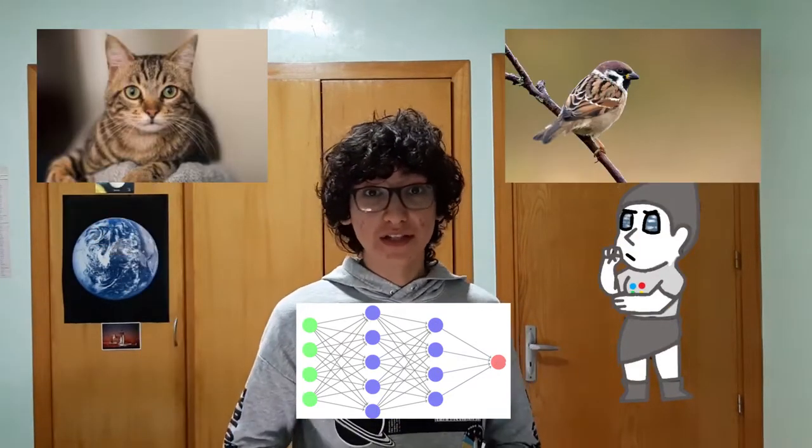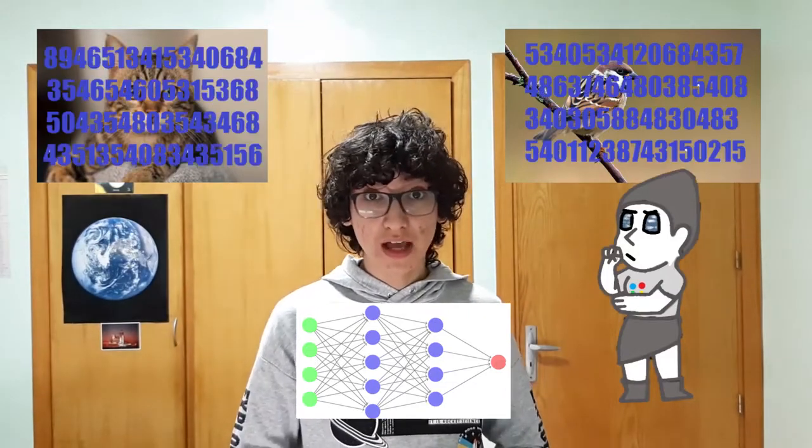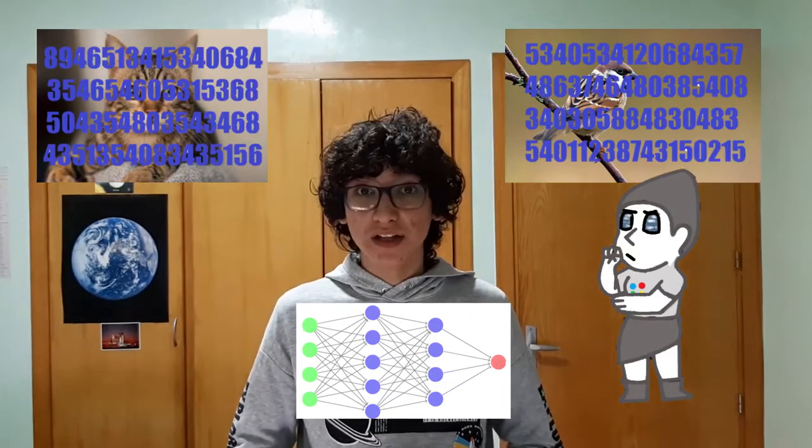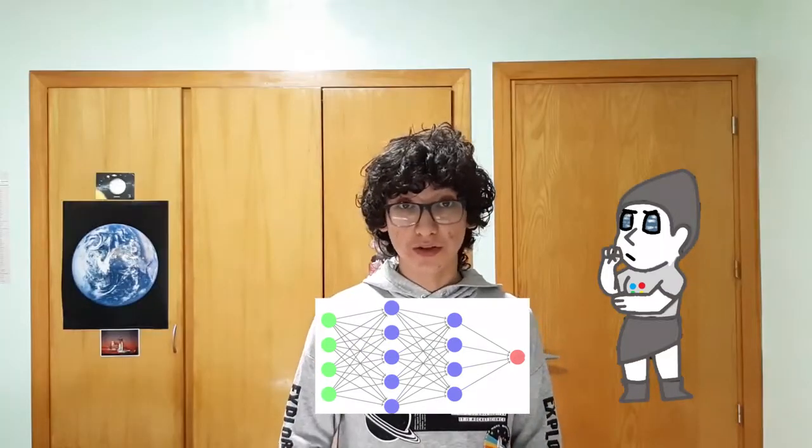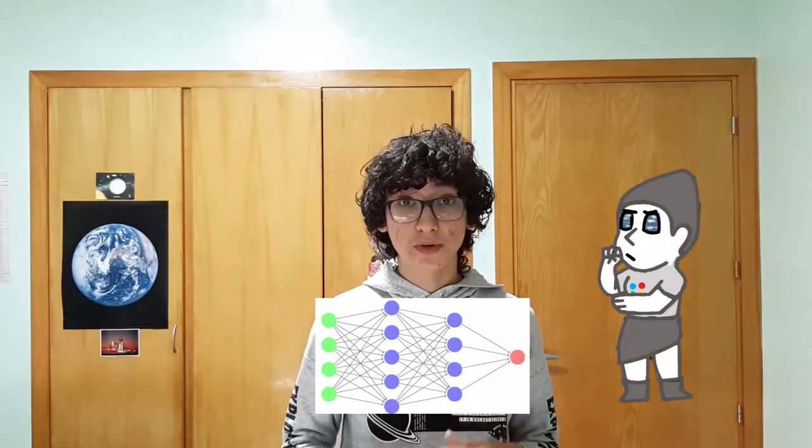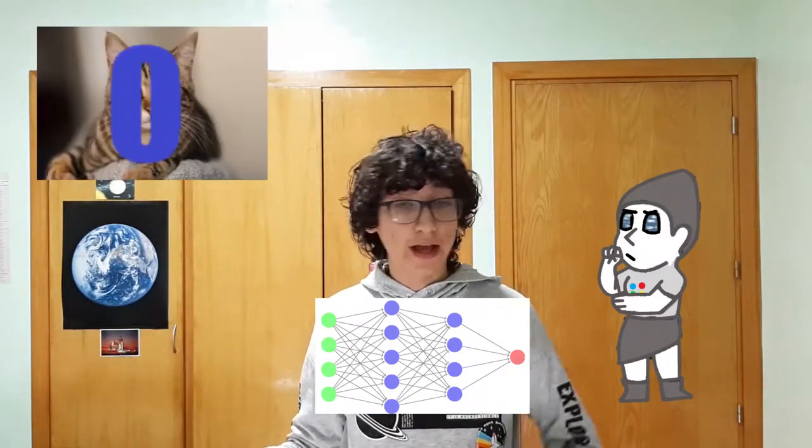At the beginning, she will change the images into a sequence of numbers by, for example, changing every pixel into a number based on its color. And at the last layer, there's only one number that corresponds to the animal. Zero for the cat and one for the bird, for example.